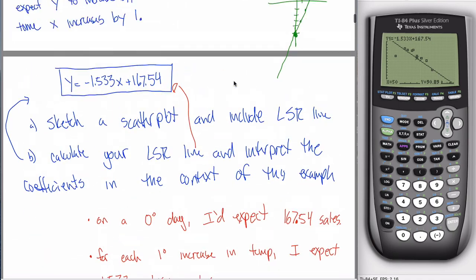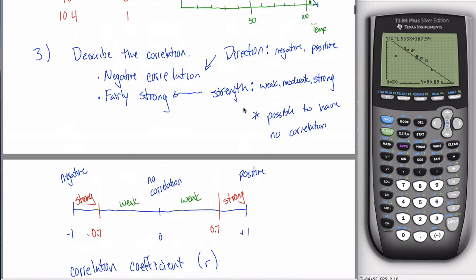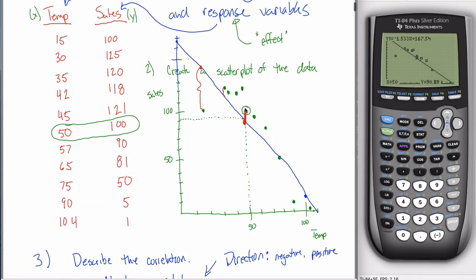The residual is always just the actual Y value minus the expected Y value. And you can memorize that if you want, but it kind of makes sense with this interpretation of how far above the line a point is. The actual Y is 100, but the expected Y was like 90 or so, so it's about 10 above. That's all the residual is.